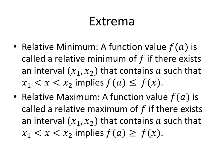A relative minimum is a function value f of a. If there exists an interval x1 to x2 that contains a, such that f of a is the smallest value of any of the function values on that particular interval. A function value f of a is called a relative maximum of f if there exists an interval from x1 to x2 that contains a, such that for any x value in the interval, f of a is the largest or equal to the largest of any of the y values.